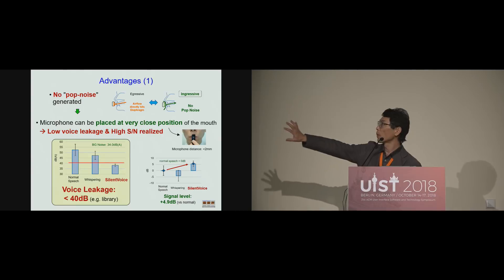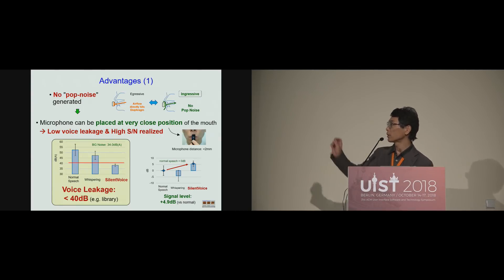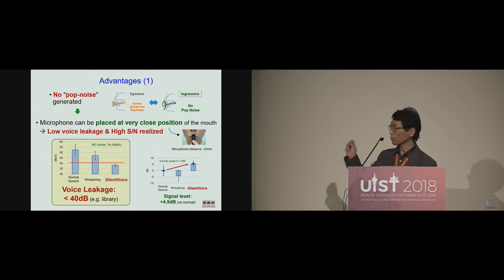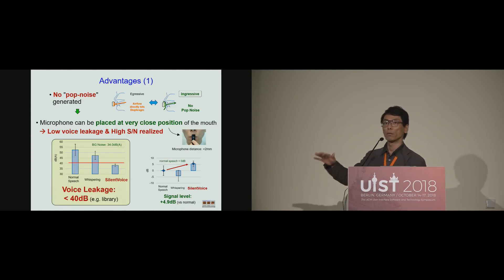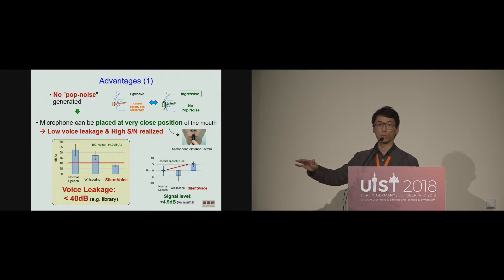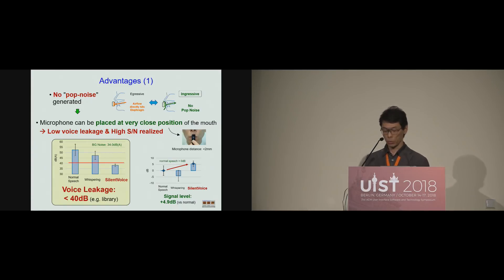Therefore, this method can achieve very low voice leakage and high SNR ratio. Our experiment indicated that silent voice can achieve voice leakage less than 40 decibels. That means we can use voice input in a library without disturbing other people.